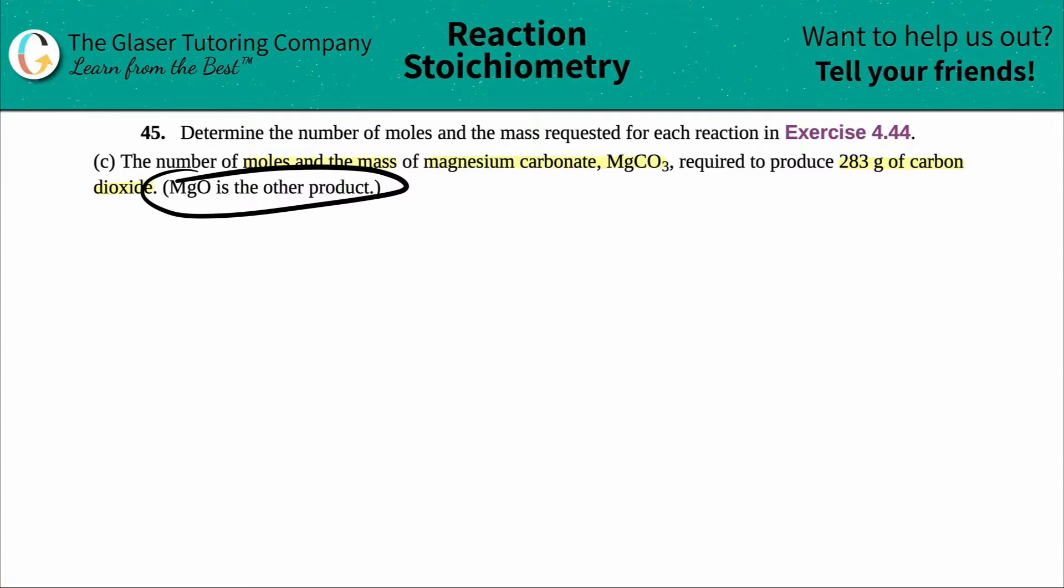They gave us a hint that magnesium oxide MgO is the other product. This is a stoichiometry problem because they only gave me one number—283 grams of carbon dioxide—and they're asking for information about another compound. When you see this, we have to do stoichiometry, which is just a fancy way of saying doing conversions with a balanced equation.